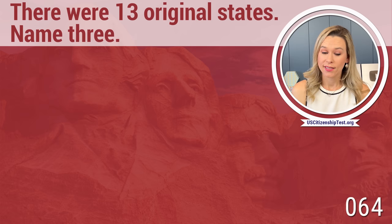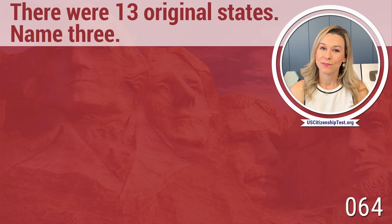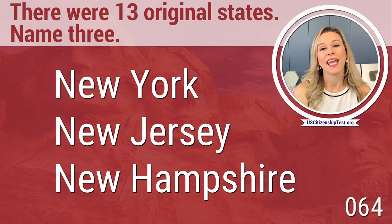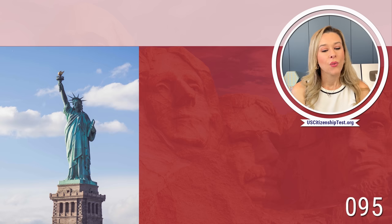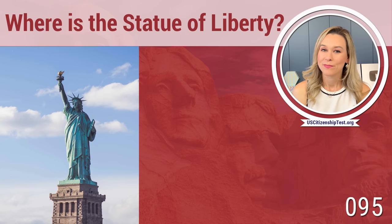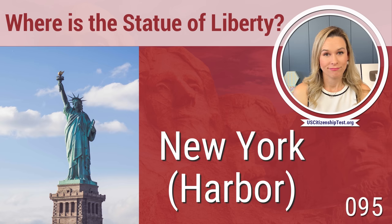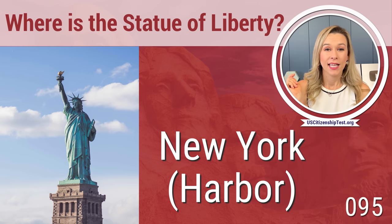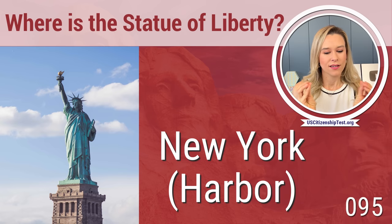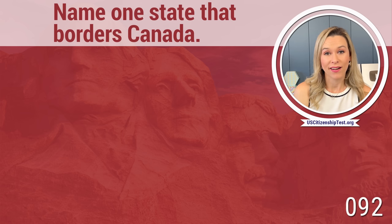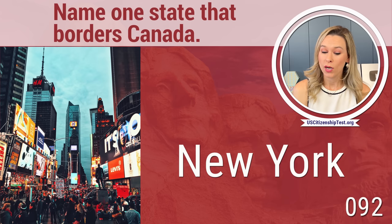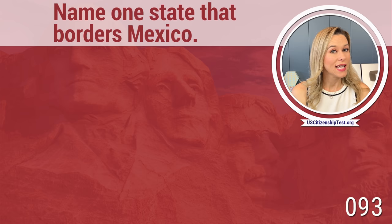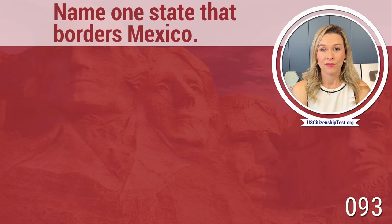There were 13 original states. I find it easiest to remember the ones that start with New — New York, New Jersey, and New Hampshire. Where is the Statue of Liberty? In the New York Harbor — I actually got to climb all the way up to the Crown. Name one state that borders Canada. New York. Name one state that borders Mexico. California.